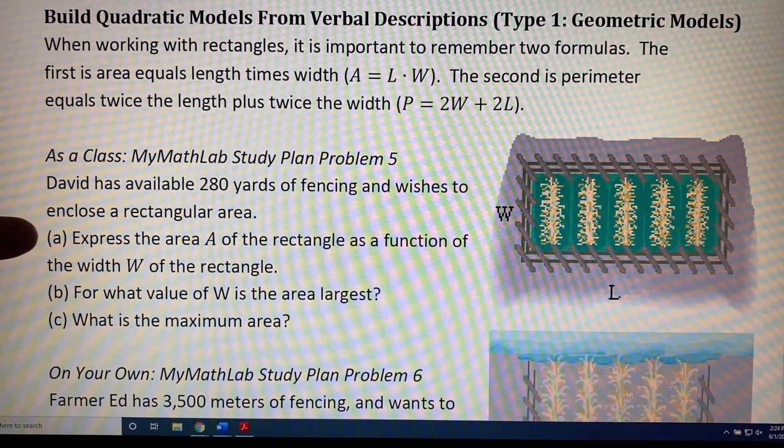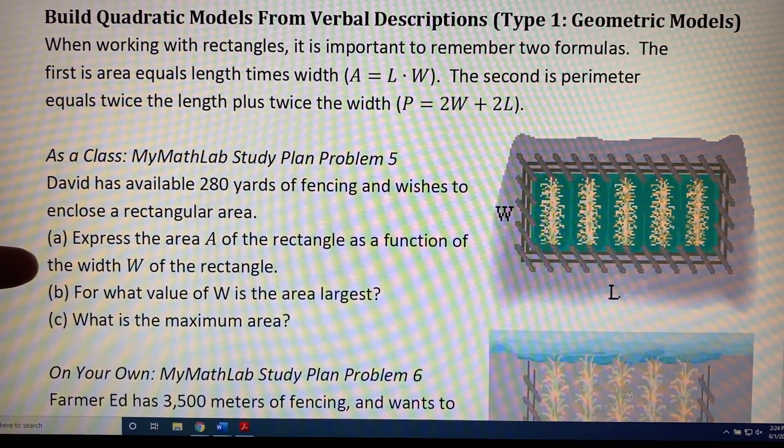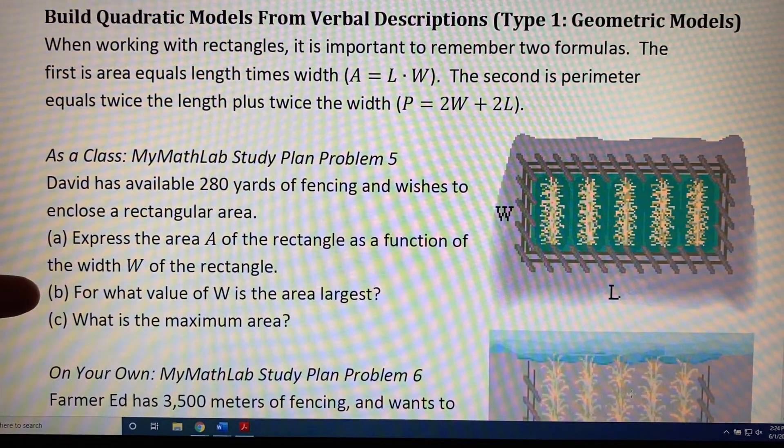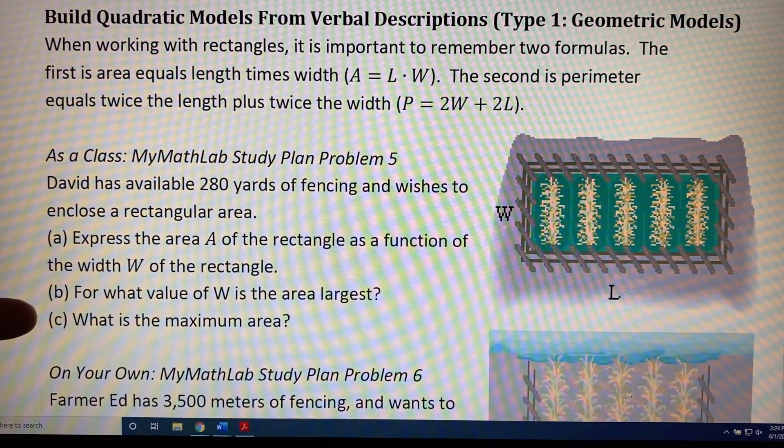This problem will ask us to express the area A of the rectangle as a function of the width W of the rectangle. Then it will ask us what should the length of W be so that the area of the rectangle is as big as possible. And finally, it will ask us what is the biggest area possible.